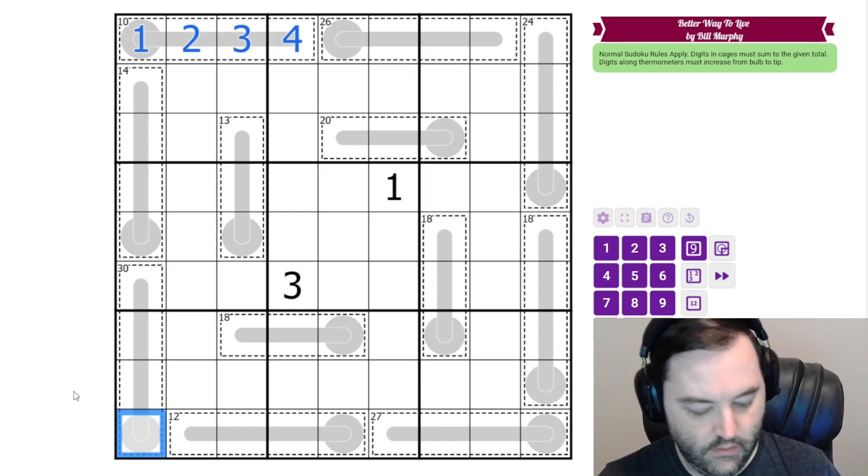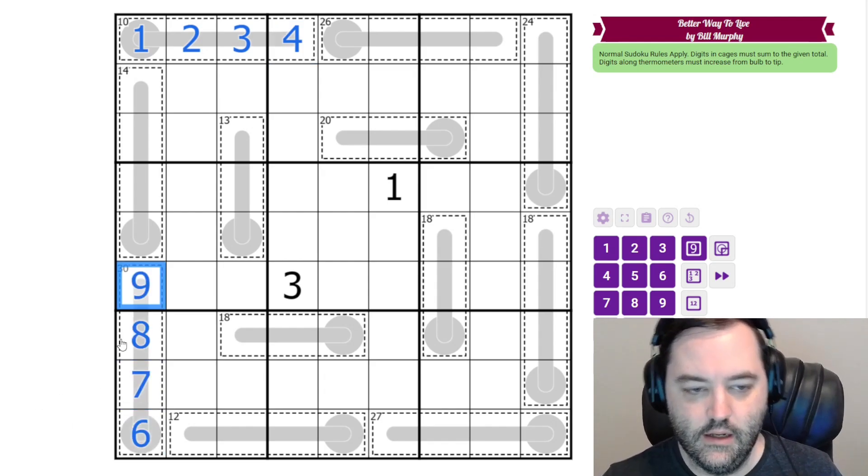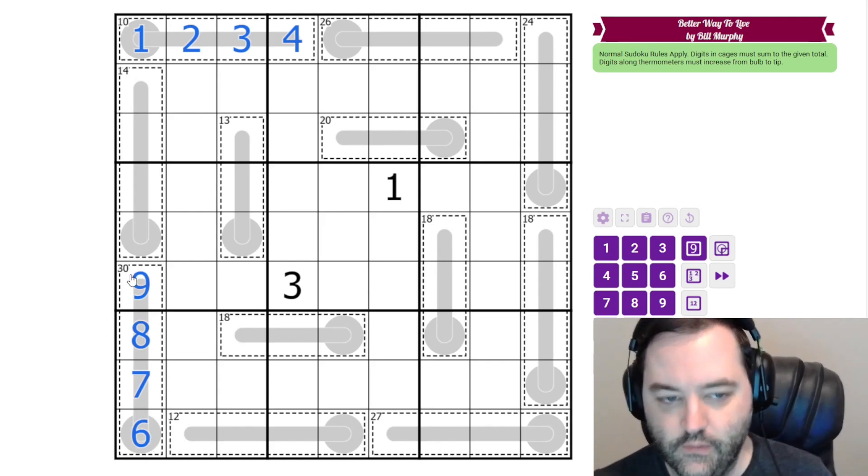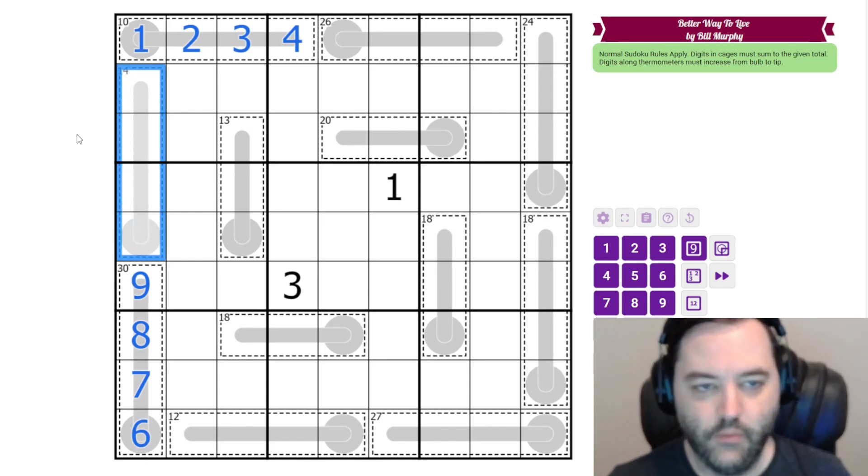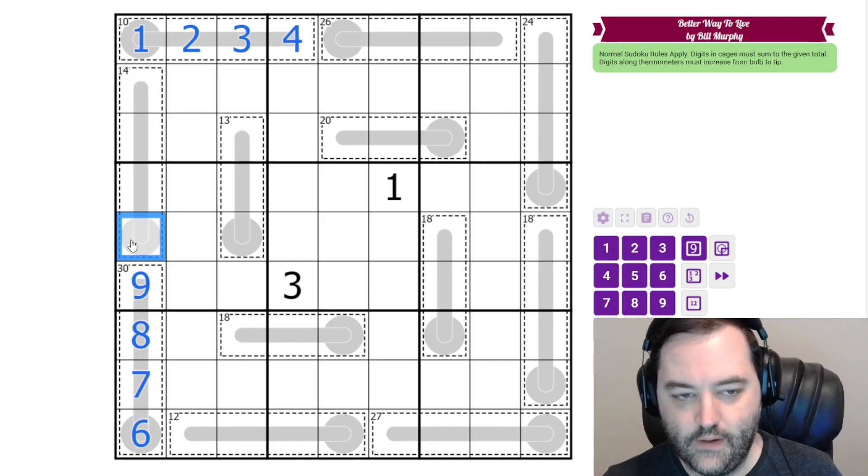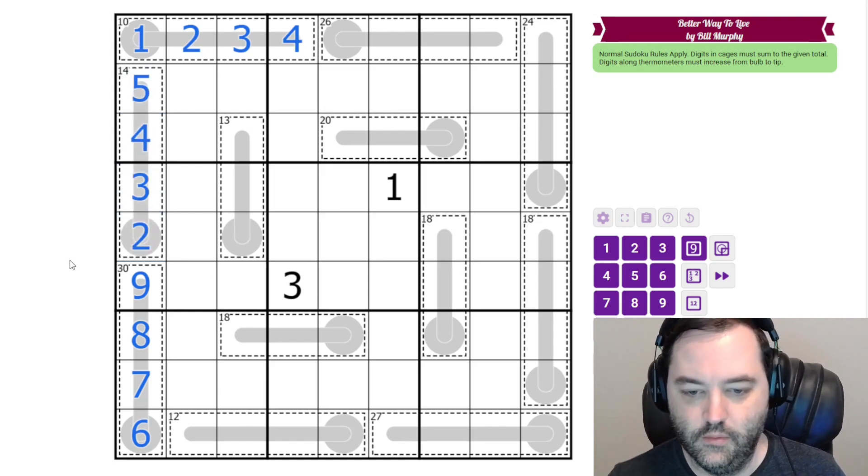You can do the same with the 30 down here. This has to be six, seven, eight, nine, and it has to be in that order because of the thermo. Now the remaining digits are two, three, four, five, and again, they have to be in order because of the thermo.